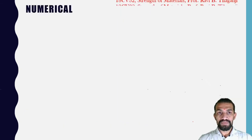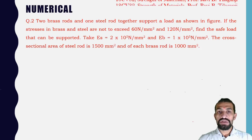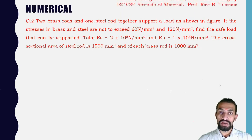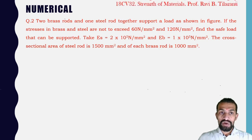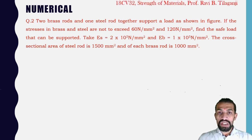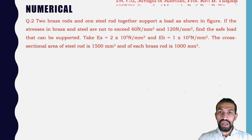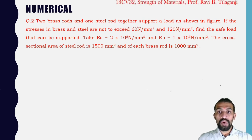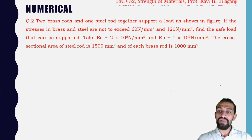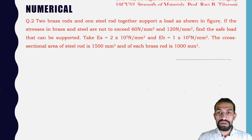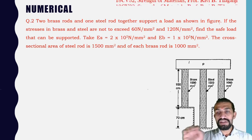Second numerical: two brass rods and one steel rod together support a load as shown in the figure. Sometimes the figure is not given and we need to interpret it from the question.